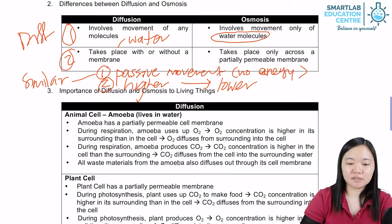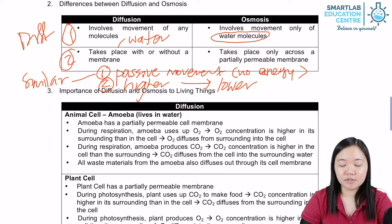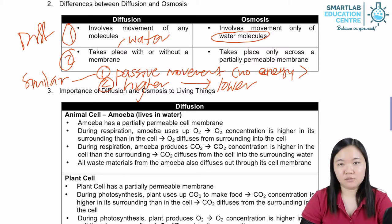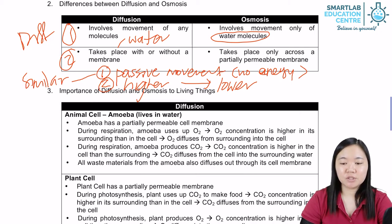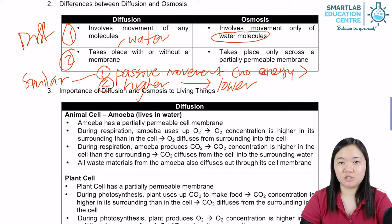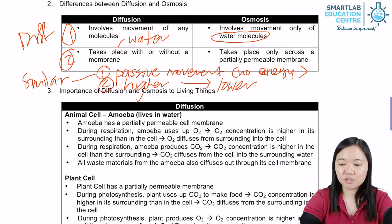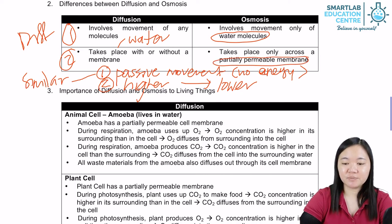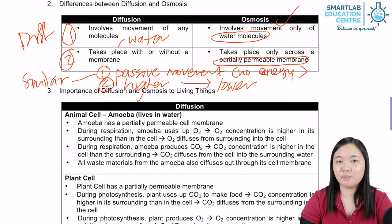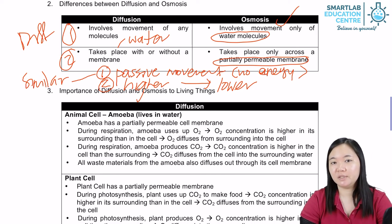Number two, the second difference: diffusion can take place with or without a partially permeable membrane, while osmosis will have to take place only in the presence of a partially permeable membrane. Partially permeable membrane must be there in order for osmosis to occur. If there is no partially permeable membrane, water is probably undergoing diffusion.